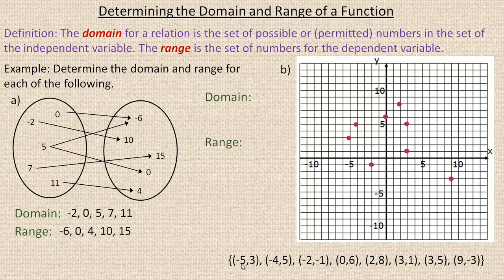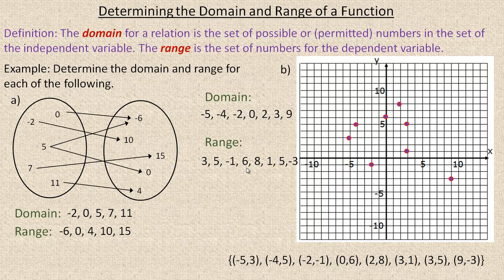The domain is the x values: -5, -4, -2, 0, etc. There are two 3's, so you don't need to list 3 twice. The range would be 3, 5, -1, 6, 8, etc. Those are all unique, so there are actually 8 values in the range even though there are only 7 numbers in the domain. That would be the range — the set of y values for this particular relation.